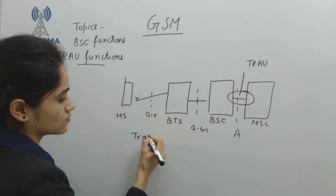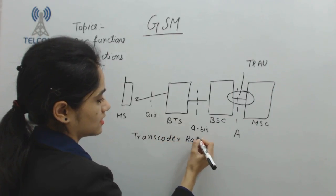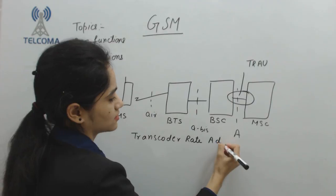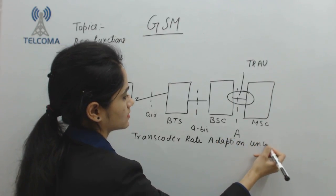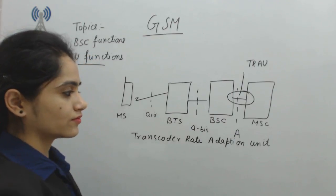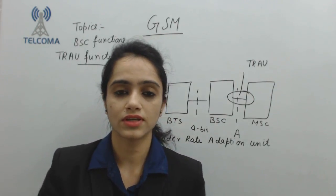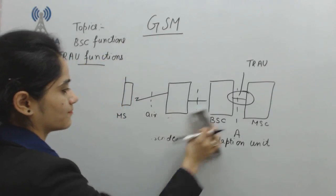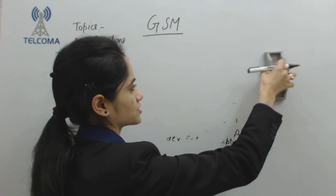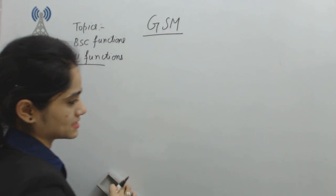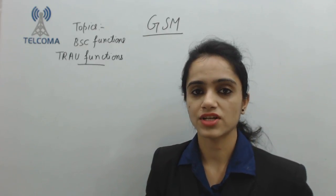This TRAU is the Transcoder Rate Adaption Unit. We will study its functionality and its position in today's class. Before moving to TRAU, let's first study the functionality of BSC — what are the functions of BSC?